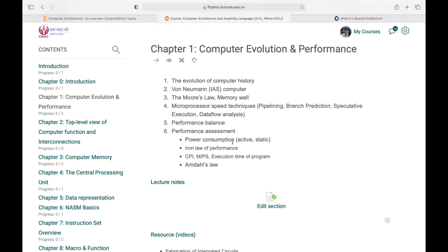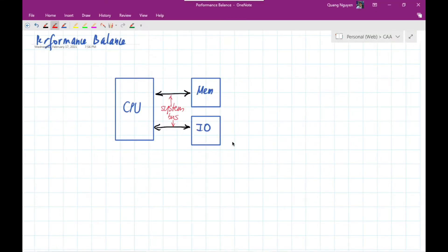To explain about the performance balance, let's take a look at these pictures. As mentioned in the last chapters, CPU is not the single component in the computers. It works together with the memories and the I/O as well. And the problem here is how to make the whole system fast, not just only the CPU.